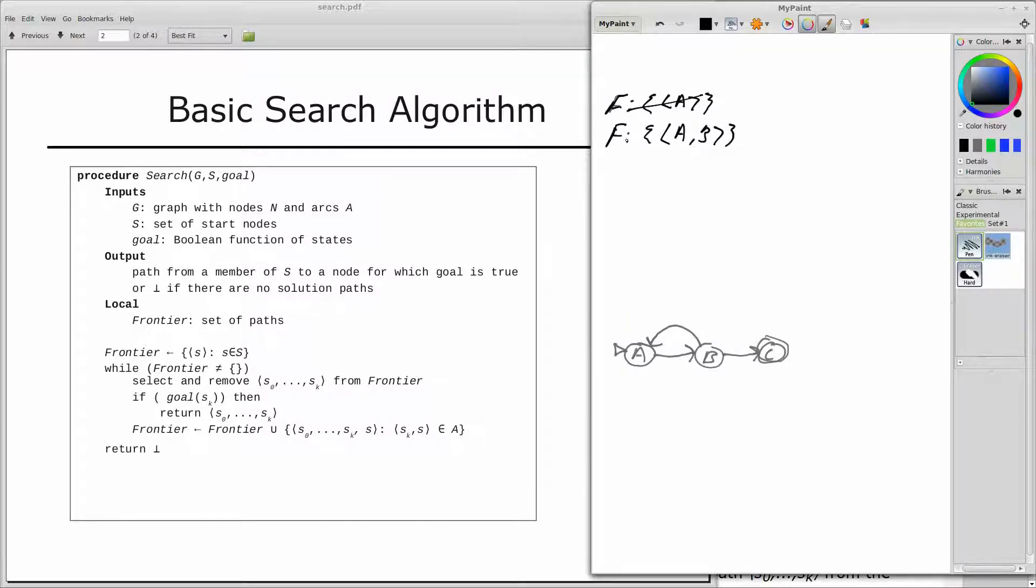So we're going to remove this element from the frontier. And now things get a little bit interesting, because from B, two nodes are reachable. We can go back to A, or we can go forward to C. There's nothing in this algorithm that says we shouldn't put both of those paths onto the frontier. So the new version of the frontier is this: A, B, A. And we now have two elements. We also have the element A, B, C. And this is where the lack of specificity in this basic search algorithm, this generic search algorithm, becomes an issue.